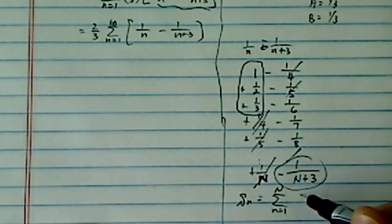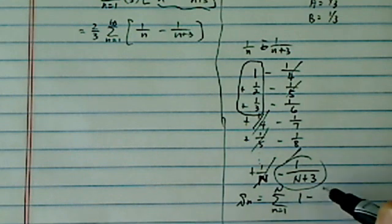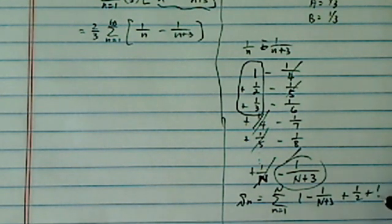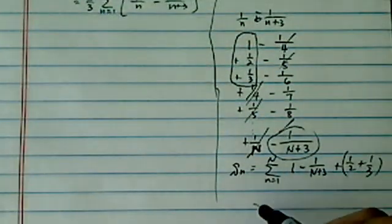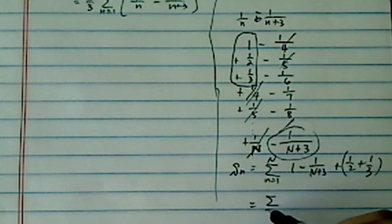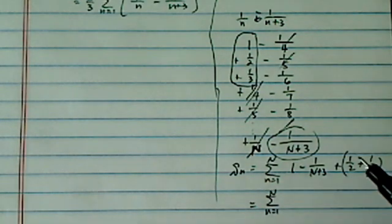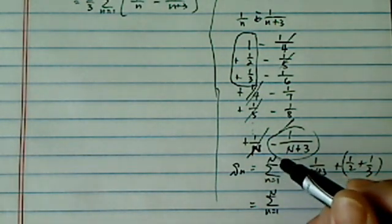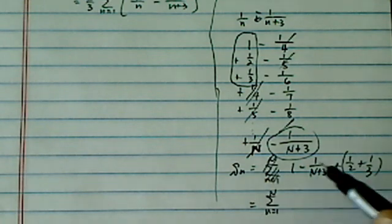Then you have 1 minus 1 over n plus 3, then plus 1/2 plus 1/3. Half and third will take care of, that's pretty easy. So we have n equal to 1 to bigger n, partial sum is equal to this.